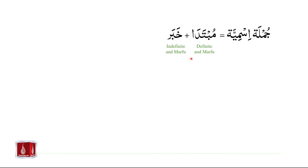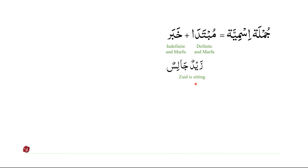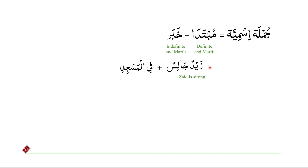Here we have a simple structure of jumla-ismiyah, which is comprised of two parts: muptada and khabar. Muptada is definite and marfoo, and khabar is indefinite and marfoo. An example of jumla-ismiyah is zaidun jalisun — Zaid is sitting. Let us take zaidun jalisun and see if we can add more information to it. For example, we can add phil-masjiyah.